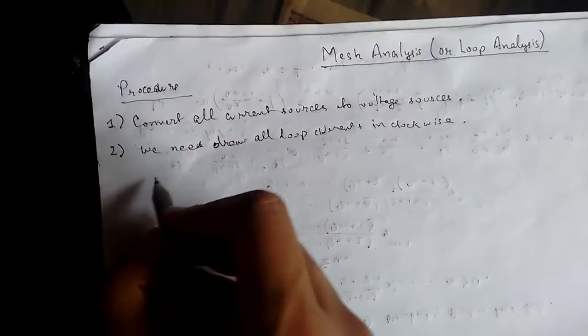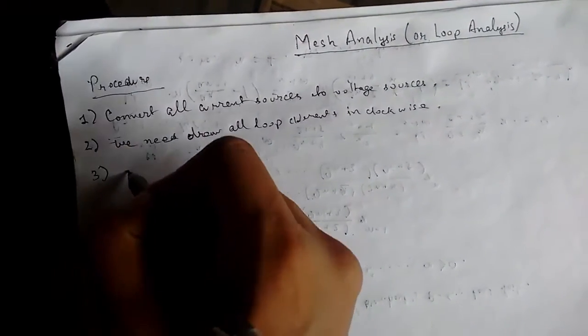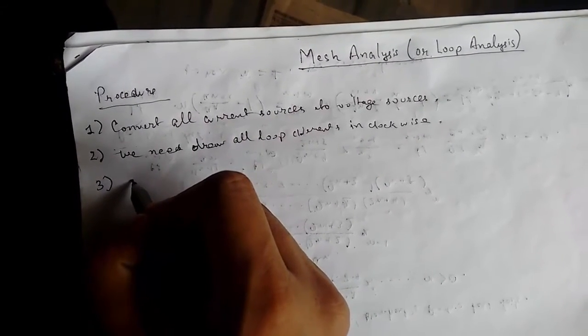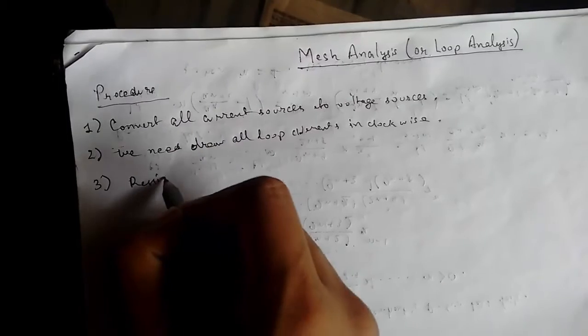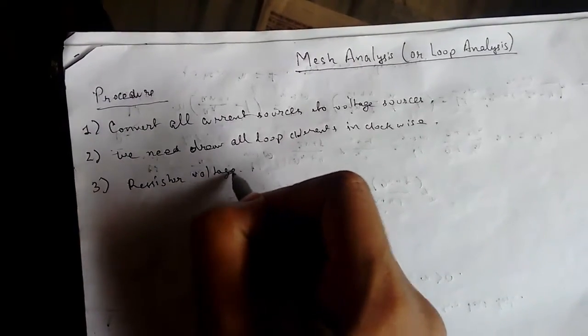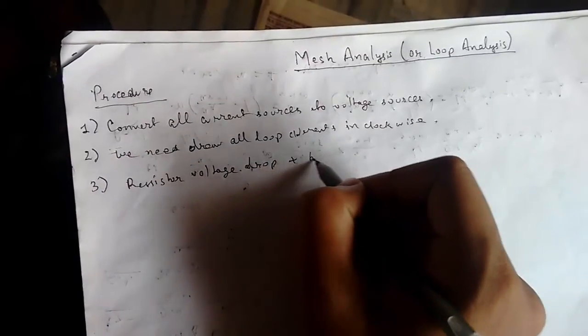Next, we need to assign values. Then we need to identify resistor values, resistor voltage drops - voltage drop either plus or minus.